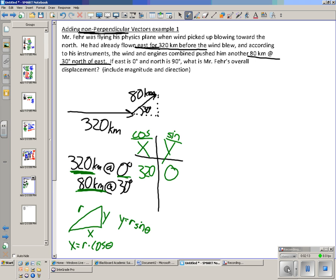Here's the slightly more interesting one. 80 kilometers times the cosine of 30, that would be 69.3, and then 80 kilometers times the sine of 30 is going to be 40 kilometers.